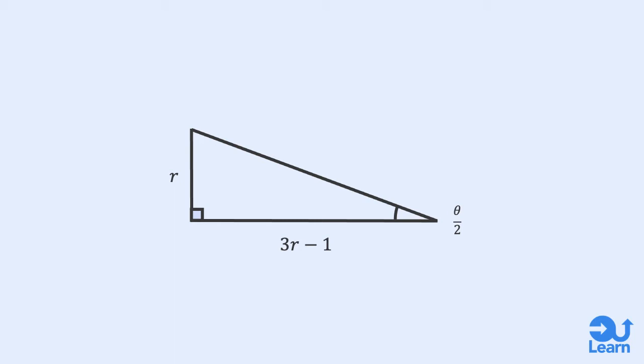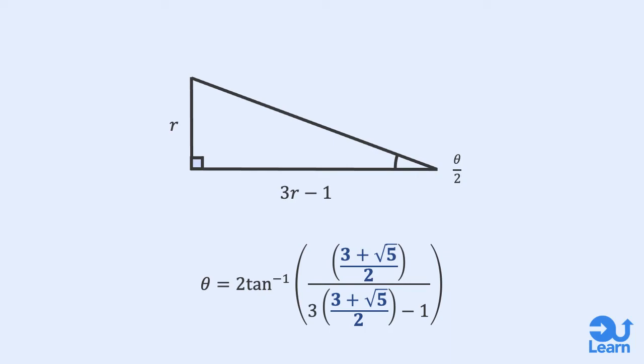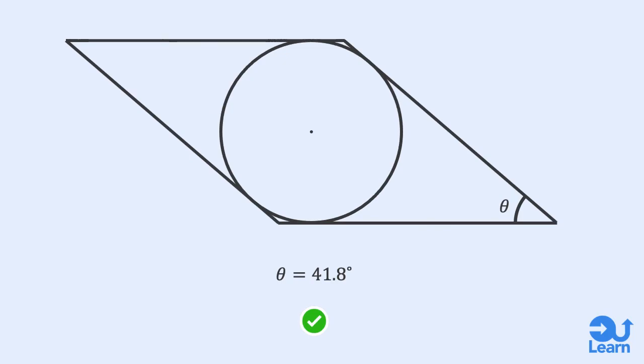Using trigonometry, we can find what half the missing angle is. Since r and 3r minus 1 are opposite and adjacent to the indicated angle, we would use the trigonometric relationship tangent. Inversing tangent will give us our value of half theta and multiplying by 2 will give us our missing angle value. Let's substitute our opposite and adjacent expressions. And now substitute our value for r. Placing it all into a calculator, our value of theta is 41.8 degrees to three significant figures.